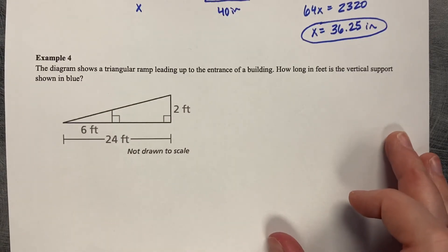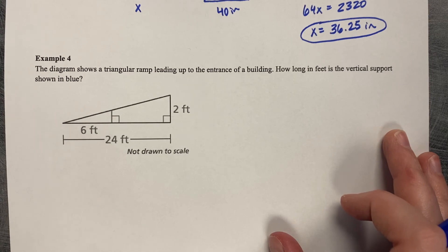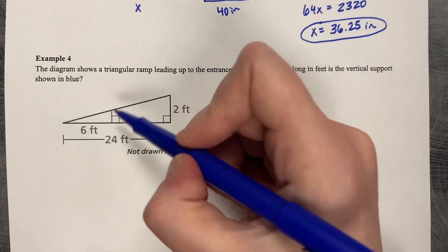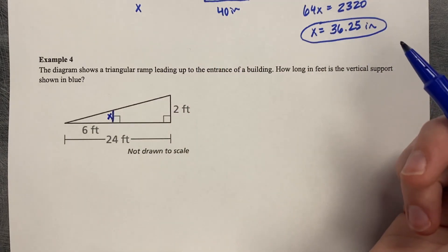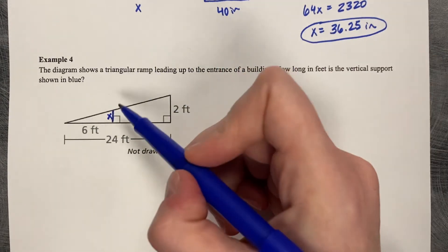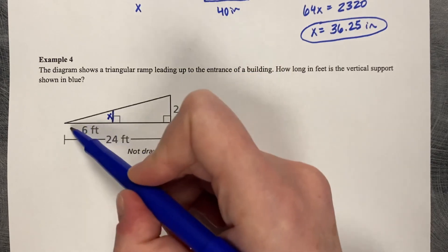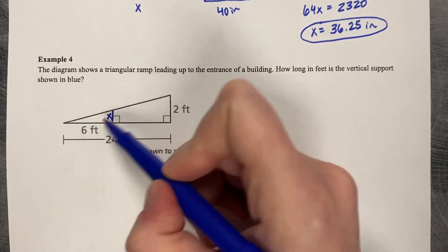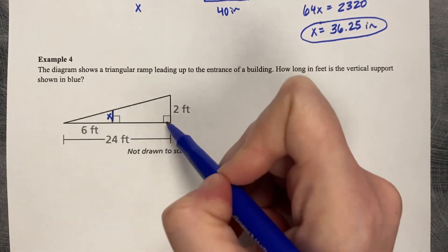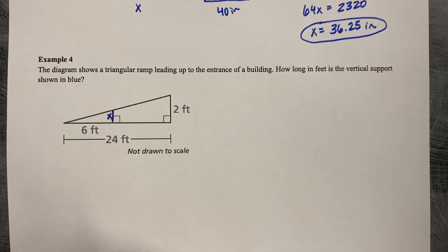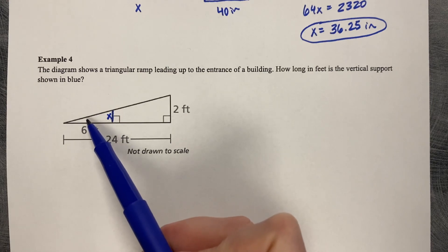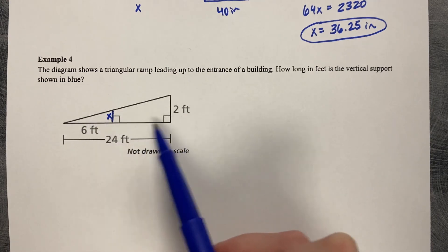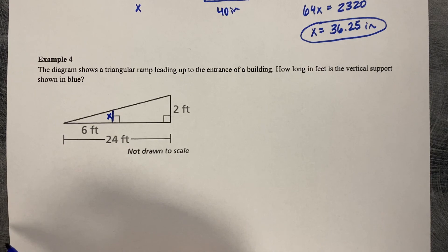All right, in our last one, the diagram shows a triangular ramp leading up to the entrance of a building. How long in feet is the vertical support shown in blue? Yours is not in blue, but it's this guy right here. So how tall is that vertical support? So this picture has two triangles in it. We've got this smaller one that I know has that length of six on it. But then we also have this big one. And we know that they share two angles because they share this really small acute angle. And they both share in 90 degrees. So we know they're similar to each other.